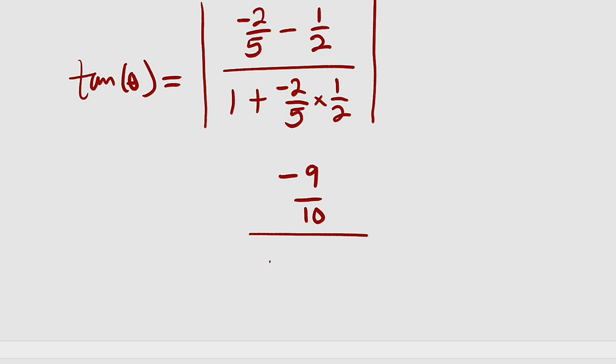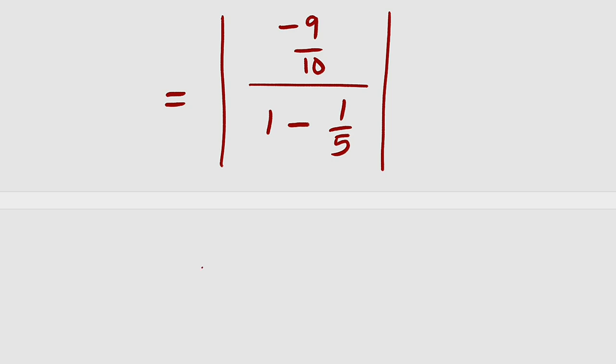So this is negative 9 divided by 10. The whole of this divided by 1 plus negative 2 divided by 5 multiplied by 1 divided by 2 will give us negative 1 divided by 5. Well, we can write the whole of this as 1 minus 1 divided by 5 instead of plus and minus. So let me make it negative from here. Our absolute value. This is equal to negative 9 divided by 10 divided by if you simplify this, you are going to obtain 4 divided by 5 in an absolute value.